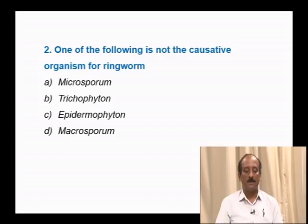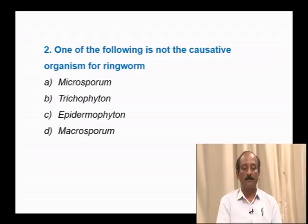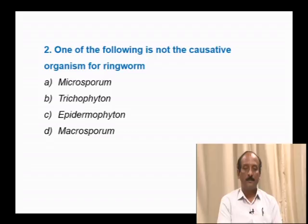Question number 2: One of the following is not the causative organism for ringworm — Microsporum, Trichophyton, Epidermophyton, Macrosporum. Microsporum, Trichophyton, and Epidermophyton are all fungi responsible for causing ringworm. But Macrosporum is not a fungus. Hence, the correct answer is Macrosporum, which is not a causative organism for ringworm.